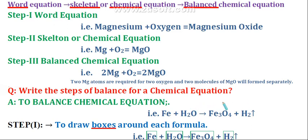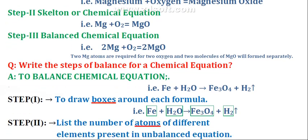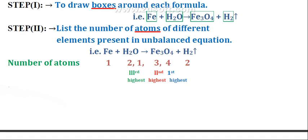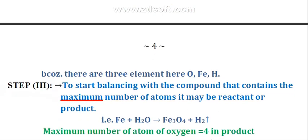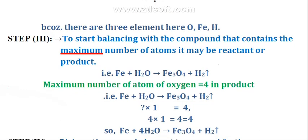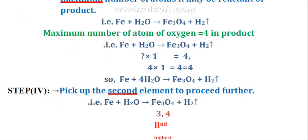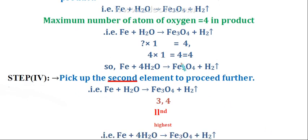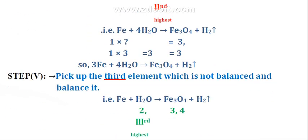The steps for balancing a chemical equation are as follows. Step one: draw boxes around each formula. Step two: list the number of atoms of different elements present in the unbalanced equation and write the number below the particular element. Step three: start balancing with the compound that contains the maximum number of atoms, whether reactant or product. Step four: pick up the second element and proceed further.